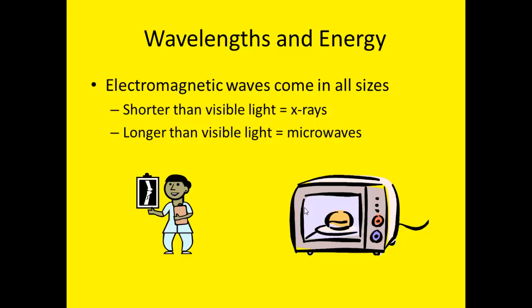Other kinds of electromagnetic waves have wavelengths that are longer than those of visible light. Longer waves have lower frequencies and lower energy. These include infrared waves, microwaves, and radio waves.